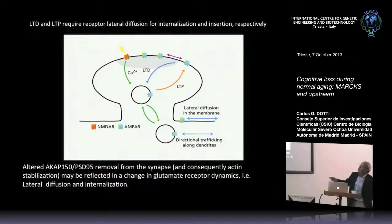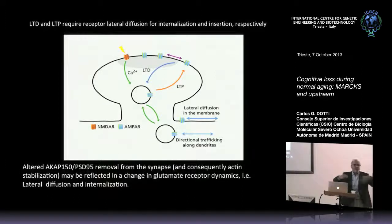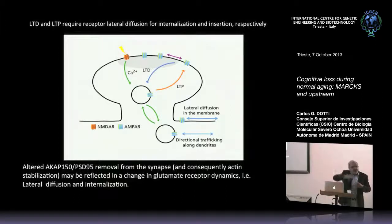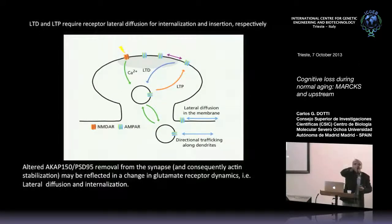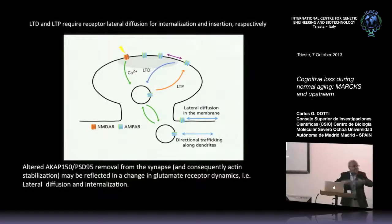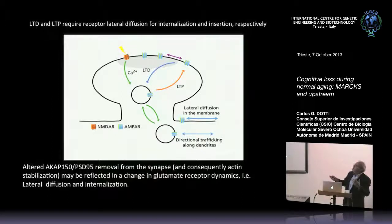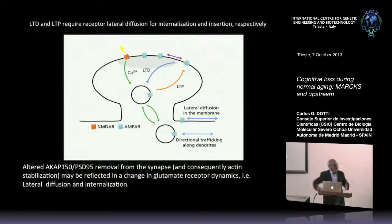I should explain that long-term depression and long-term potentiation are both necessary for the learning process — it's not that we learn thanks to LTP and forget because of LTD. You need to potentiate and then depress activity. LTP involves high-frequency stimulation and more activity; LTD involves low-frequency stimulation and less activity. Both involve the dynamics of single AMPA receptors: LTD requires lateral diffusion and internalization, whereas LTP requires recycling and reinsertion. So we're going to look at receptor lateral diffusion and internalization in old neurons.